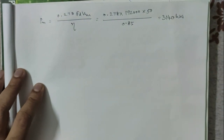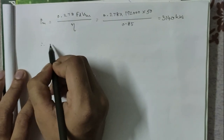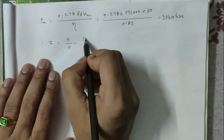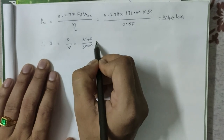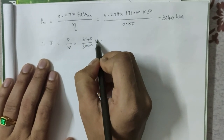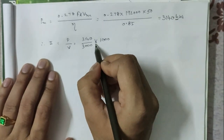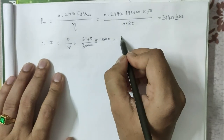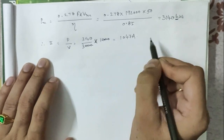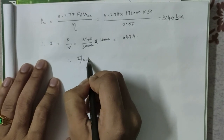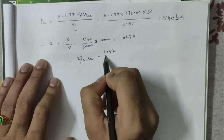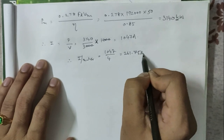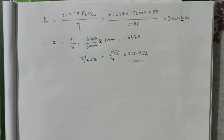The power comes out to approximately 3140 kW. The current drawn is I = P / V = (3140 × 1000) / 3000 = 1047 amperes. Therefore, the current passing through each motor = 1047 / 4 = 261.75 amperes.